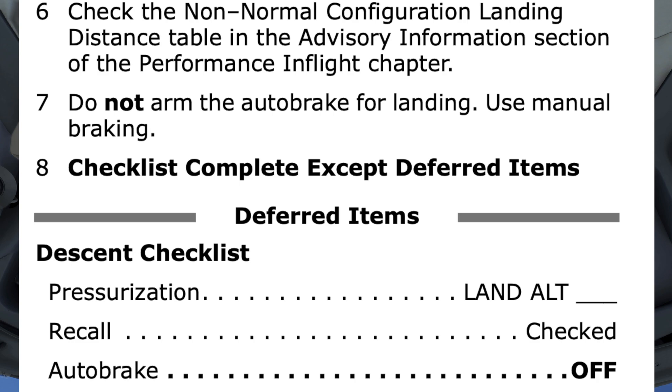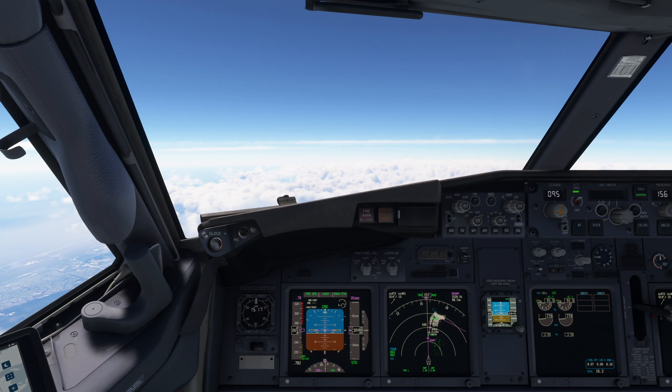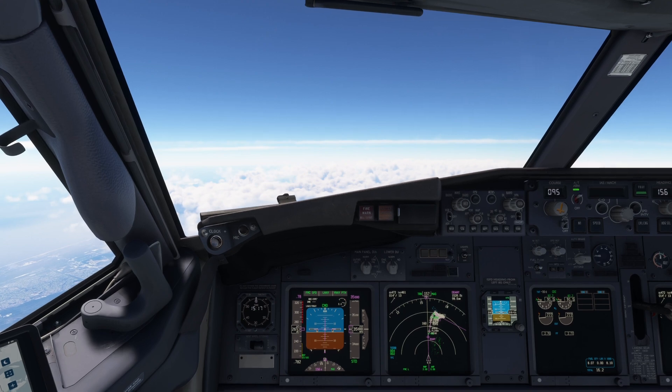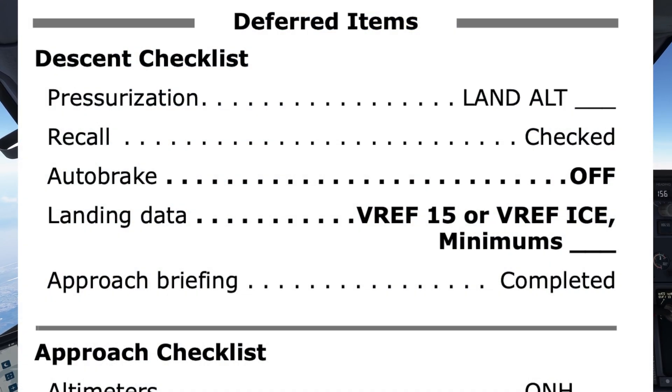Let's hold off on those for now and set up for the approach. Don't forget to select an approach reference speed for flaps 15. Also, with the increased landing distance, considerations like whether to accept a land and hold short clearance can be briefed. Let's do the deferred items.